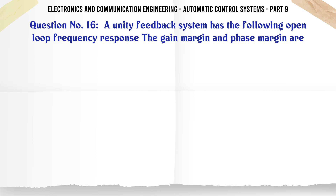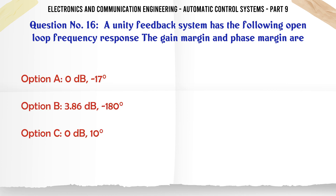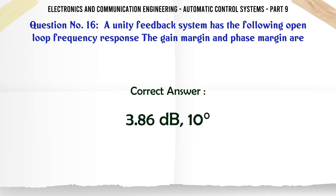A unity feedback system has the following open loop frequency response. The gain margin and phase margin are: A. 0 dB, 17°; B. 3.86 dB, 180°; C. 0 dB, 10°; D. 3.86 dB, 10°. The correct answer is: 3.86 dB, 10°.